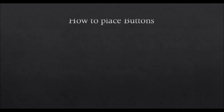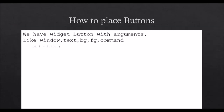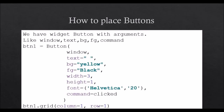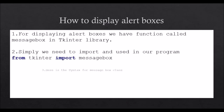To place buttons, we have a widget Button with arguments like window, text, bg (background color, set to yellow), fg (foreground/font color, set to black), and also width, height, font, and command. We will discuss command in the upcoming slides.